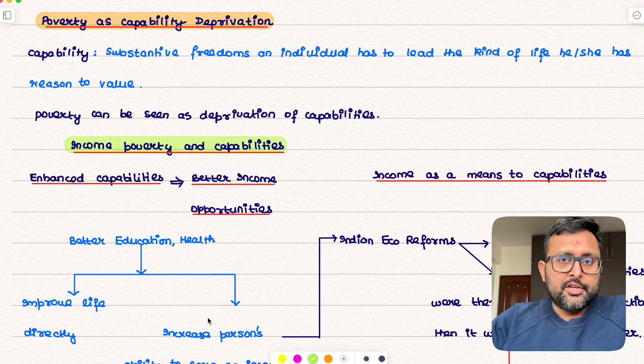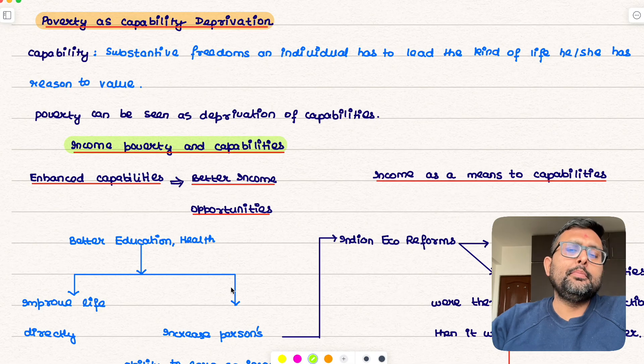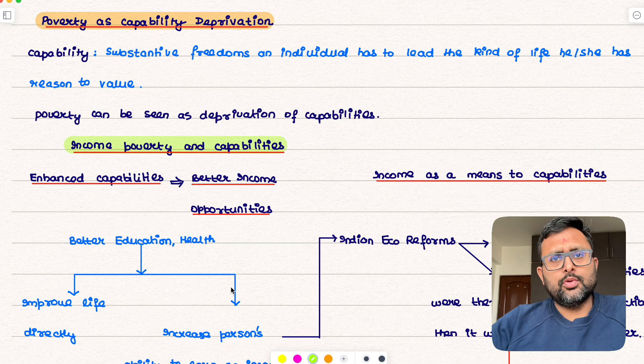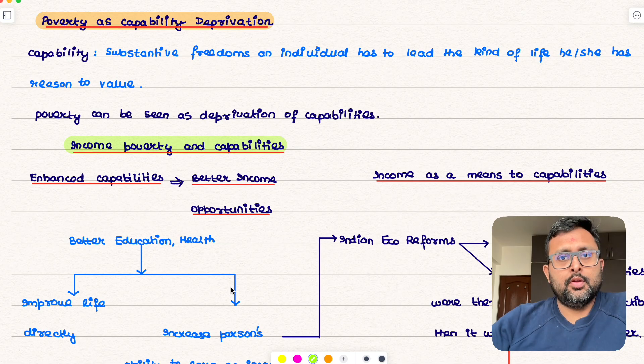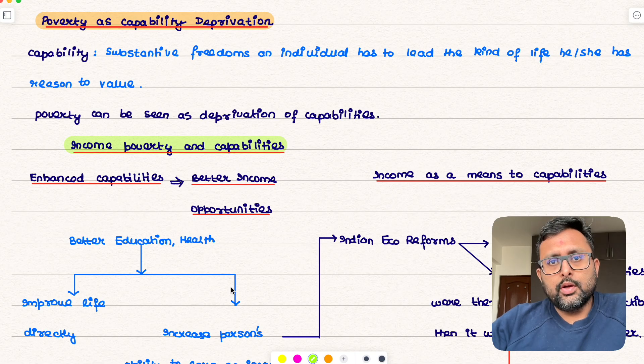Poverty as capability deprivation. By capabilities in very simple terms, we mean maybe you are a very rich individual but you do not have all the freedoms which you would want to have. You just can't go outside, maybe your health is weak. So is that the life worth living for?